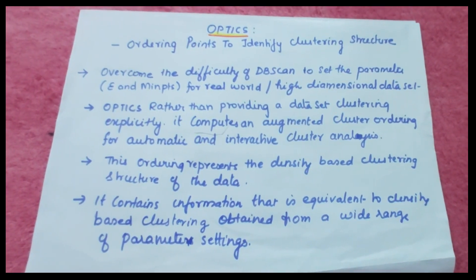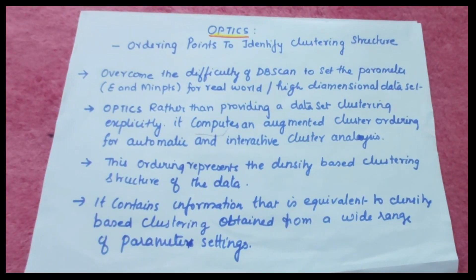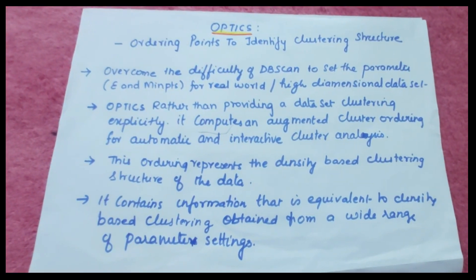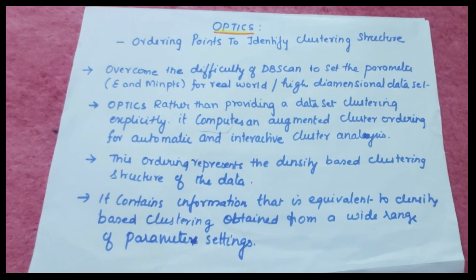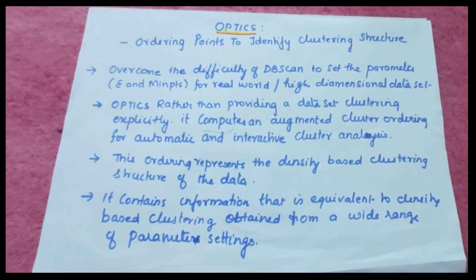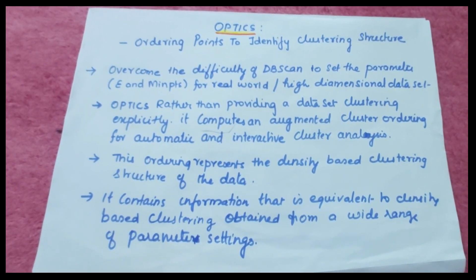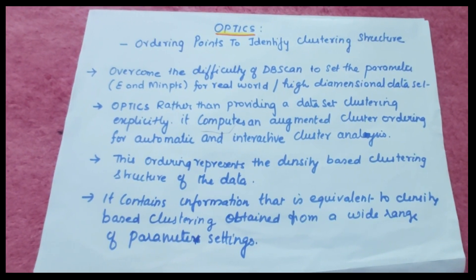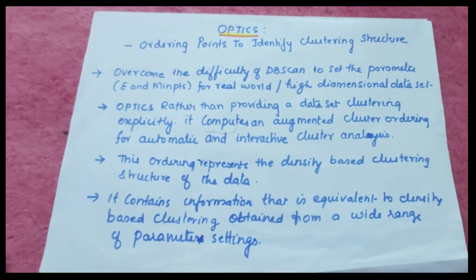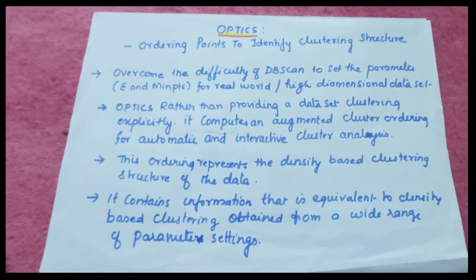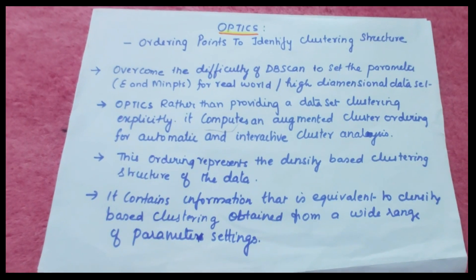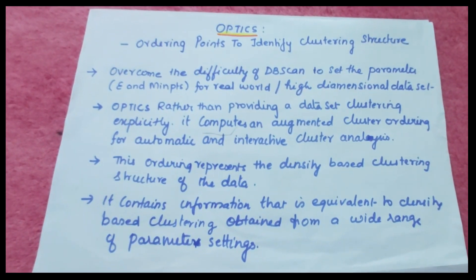OPTICS — Ordering Points To Identify Clustering Structure — is used to overcome the difficulty of DB SCAN in setting the parameters epsilon and min points for real-world or high-dimensional datasets.